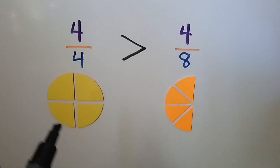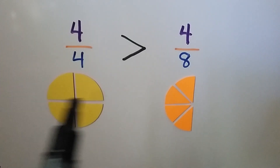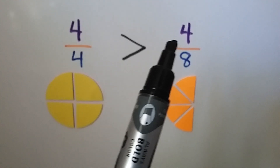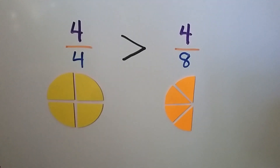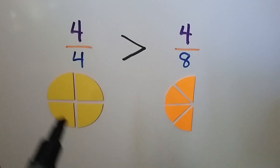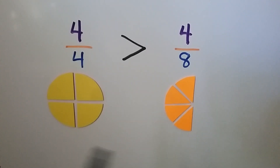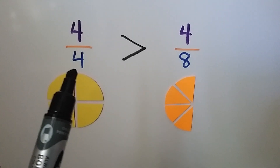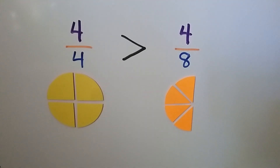Here we have a circle split into four pieces, and we have four-fourths — all four of the pieces. It has the same numerator as four-eighths. This circle was split into eight pieces, and we only have four of them. We can see that this circle has much more than this one — it's not a whole circle like four-fourths. Four-fourths is greater than four-eighths. This has the lower denominator. When fractions have the same numerator, the one with the lower denominator is the larger fraction.